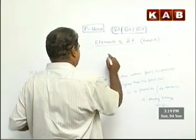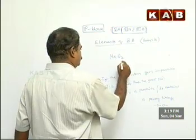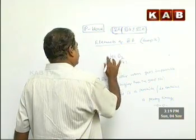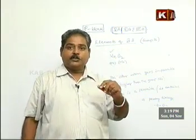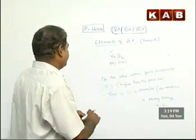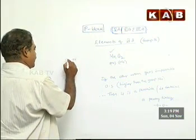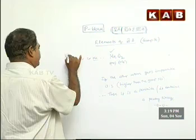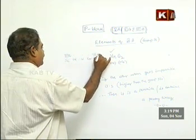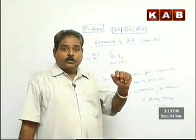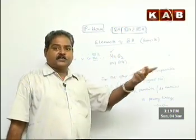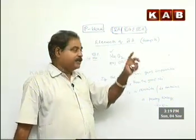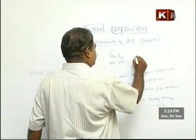Look at MnO2. Oxygen says it wants minus 2, so both oxygens want minus 4 total. For manganese, plus 4 is not impossible. Manganese belongs to group 7B — scandium is 3B, titanium 4B, vanadium 5B, chromium 6B, manganese 7B. The highest oxidation state manganese can ever have is plus 7. Manganese easily takes plus 7, so plus 4 is not impossible. Manganese is happy taking plus 4. Therefore, MnO2 is an oxide, not a peroxide.